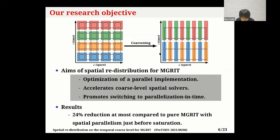Here are the aims and results of this work. The spatial redistribution on coarse levels is one optimization of MGRIT implementations. Therefore, it does not change the convergence behavior of the MGRIT method. This method accelerates the coarse-level spatial solvers, reduces MGRIT overhead, and promotes switching to parallelization in time from parallelization in space only. In the numerical experiment, we observe a 24% reduction at most in runtimes for diffusion problems using spatial redistribution.